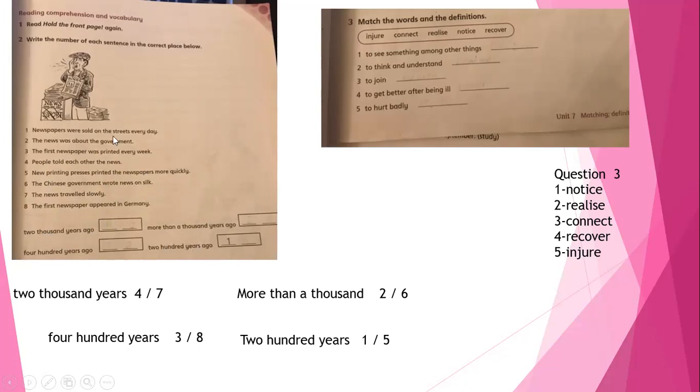Here we have the time about the sentence. When did the sentence happen? We have 2,000 years ago, more than 1,000 years ago, 400 years ago, and 200 years ago. Sentence number four and number seven happened 2,000 years ago. Sentence number two and six happened more than 1,000 years ago. Sentence number three and eight happened 400 years ago. And 200 years ago, sentence number one and number five.